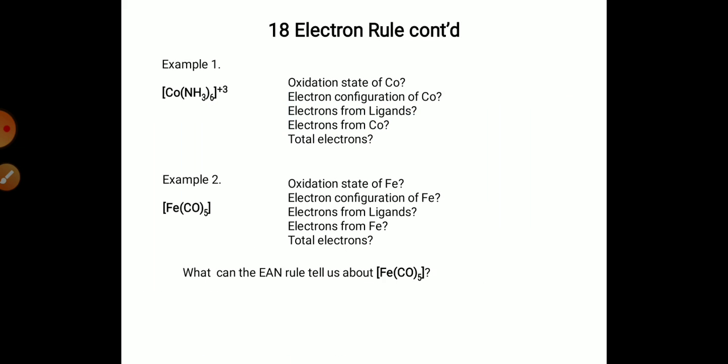To determine the 18 electron rule, firstly you have to identify the oxidation state of the central metal, electronic configuration of the metal, electrons from the ligands.